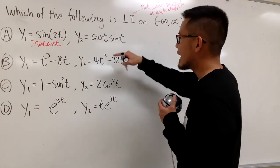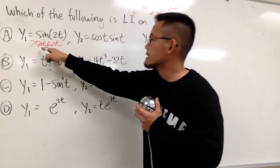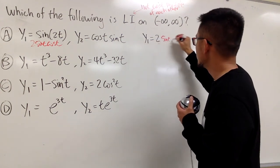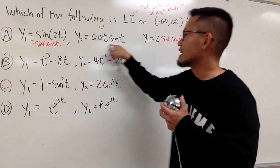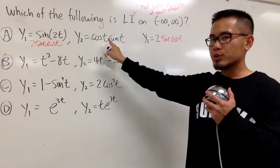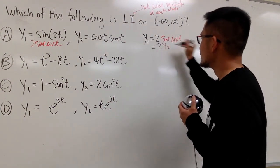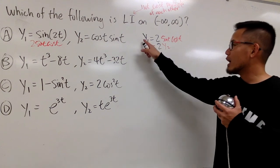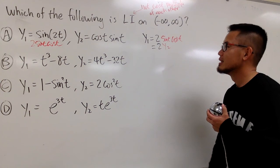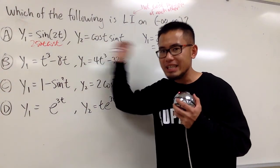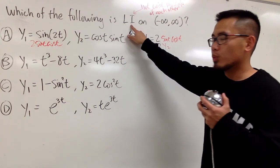You can say that y1, which is 2 times sine t cosine t, is exactly the same as y2. Of course, the order of multiplication doesn't matter. So this is saying 2 times y2. Therefore, y1 equals 2 times y2. It is a constant multiple. Therefore, this is LD, linearly dependent. That's not what we want though. We want LI.